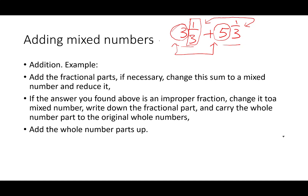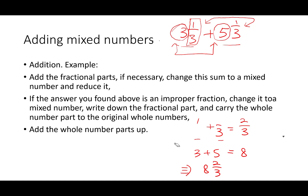Let's look at the fractional part first. If we have one-third plus one-third, because the two denominators are the same, the answer will be the numerator plus the numerator: one plus one gives us two, so two-thirds. The whole number part is three plus five, which is eight. So the total answer will be eight and two-thirds.